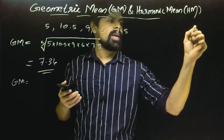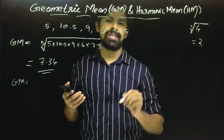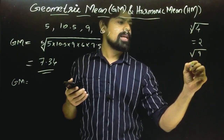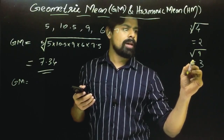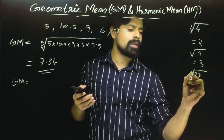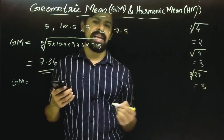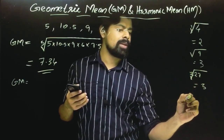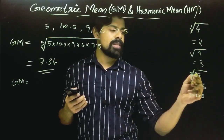Let's look at an example. The square root of 4 is 2. We find the cube root of 27: if we look at the cube root, the answer is 3. That's because the cube root of 27 equals 3.